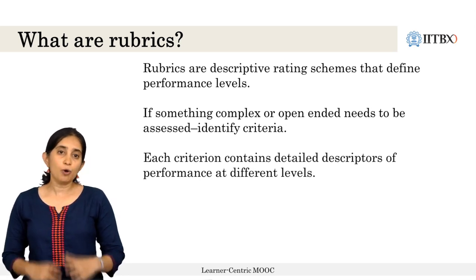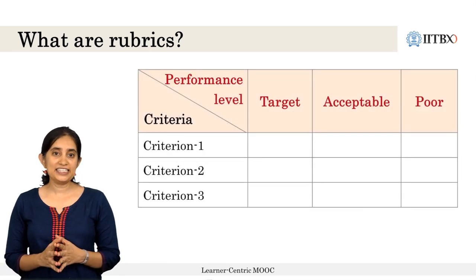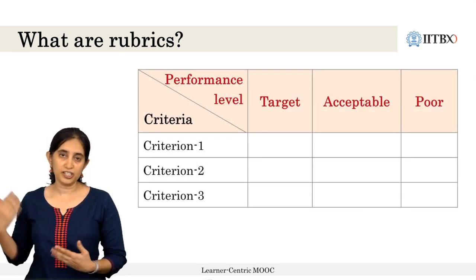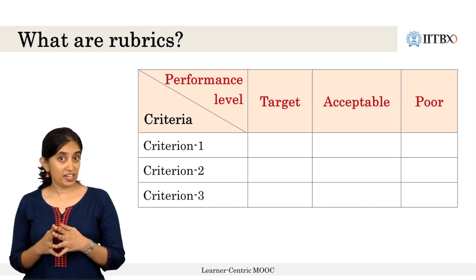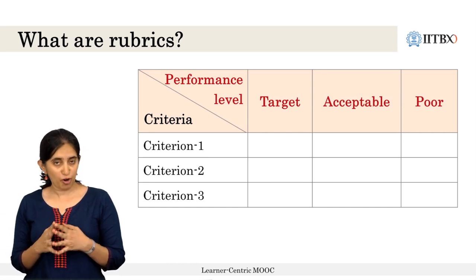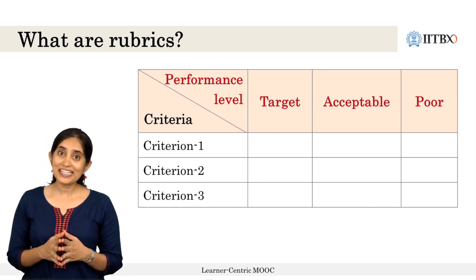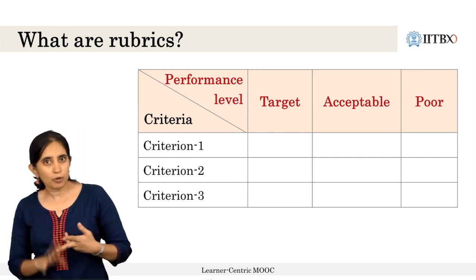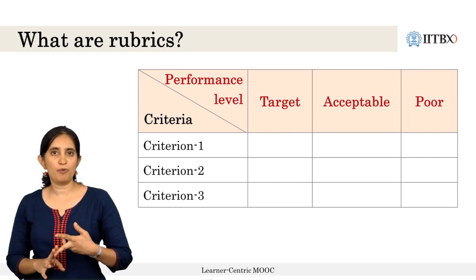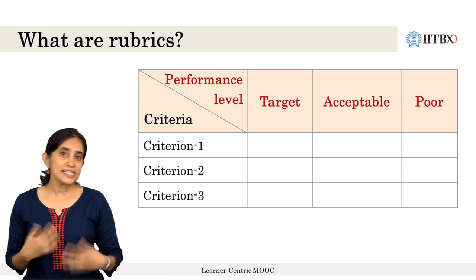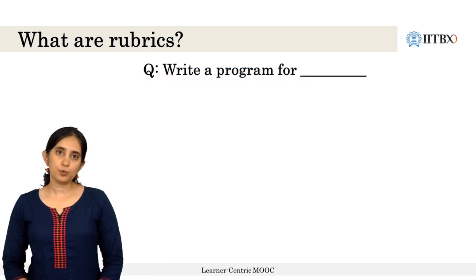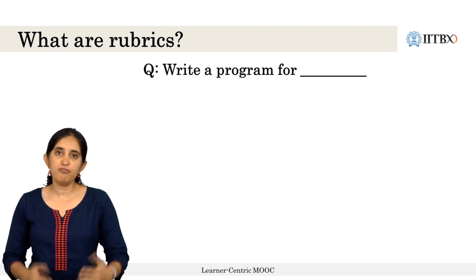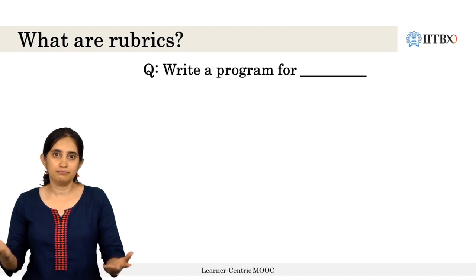An outline of a rubric will contain criteria 1, 2, 3 and so on, as well as various performance levels. In this case there are three levels: target performance, just about acceptable performance, and poor performance. Suppose the question asks learners to write a program for something.